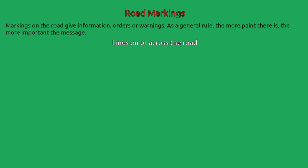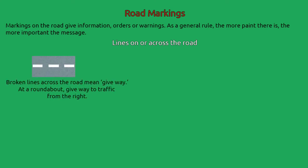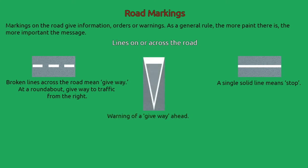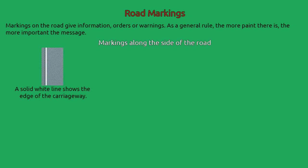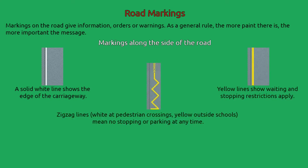Lines on or across the road: broken lines across the road mean give way; at a roundabout, give way to traffic from the right. A single solid line means stop. A solid white line along the side of the road shows the edge of the carriageway. Yellow lines show waiting and stopping restrictions apply. Zigzag lines — white at pedestrian crossings, yellow outside schools — mean no stopping or parking at any time.